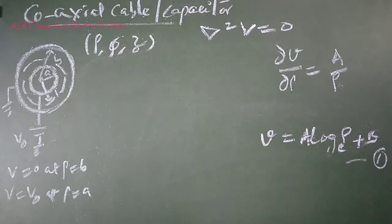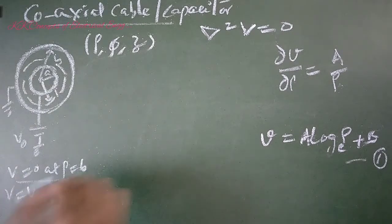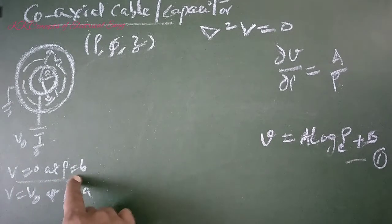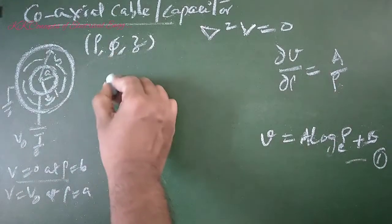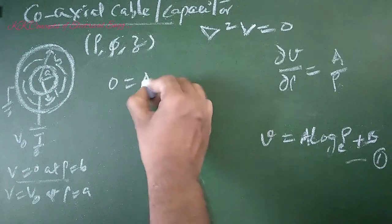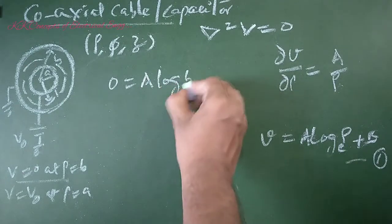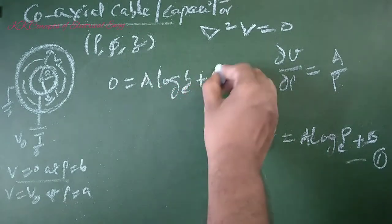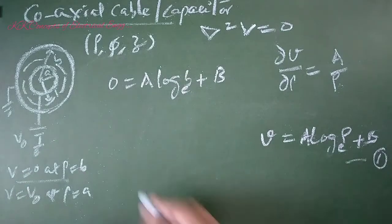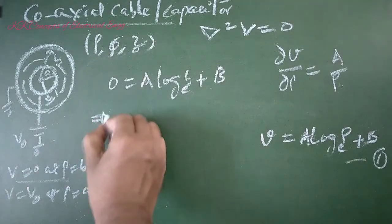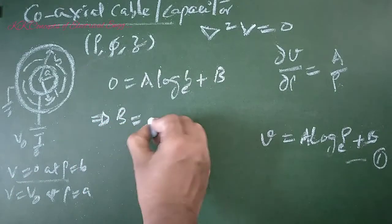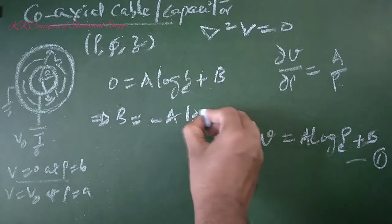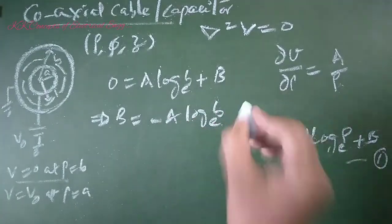Now apply boundary condition number 1: V equals 0 at ρ equals B. Then 0 equals A log B + B. This implies B equals -A log B.